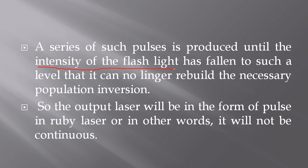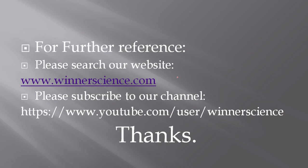This continues until the intensity of the flash light has fallen to such a level that it can no longer rebuild the necessary population inversion. So the output of the Ruby laser will be in the form of pulses — it will not be continuous. This is the major disadvantage of Ruby laser: the output is not continuous. I hope you have understood spiking in Ruby laser. If there is any query, please post in the comment section. For reference, please visit our website www.venusis.com.